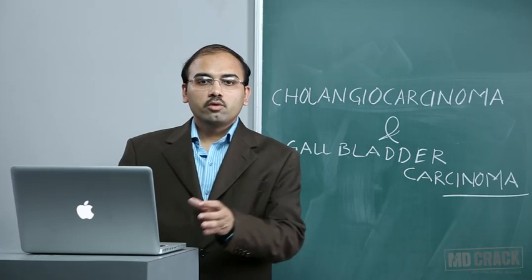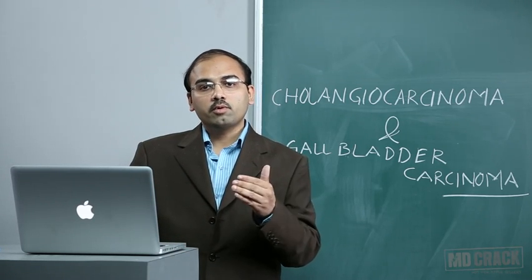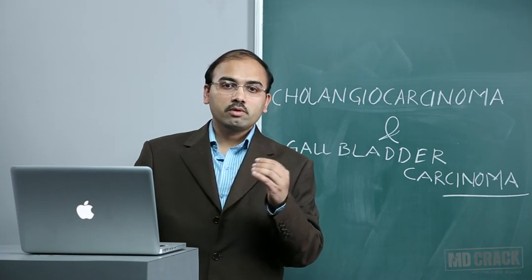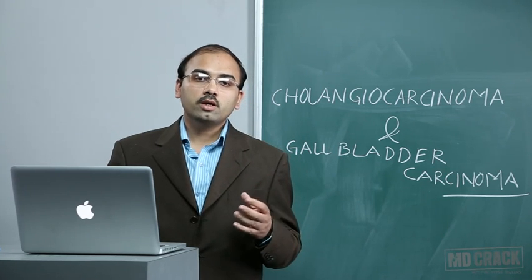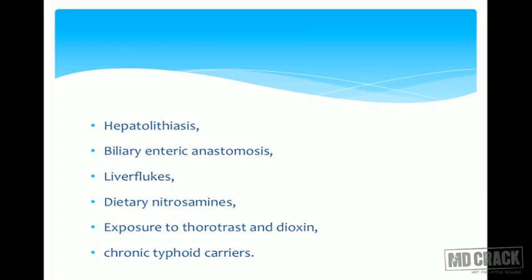Biliary-enteric anastomosis — whenever there is anastomosis of biliary epithelium and intestinal epithelium — predisposes to cholangiocarcinoma at the anastomosis site. Additional risk factors include presence of liver fluke, dietary nitrosamines, and exposure to Thorotrast and dioxin.